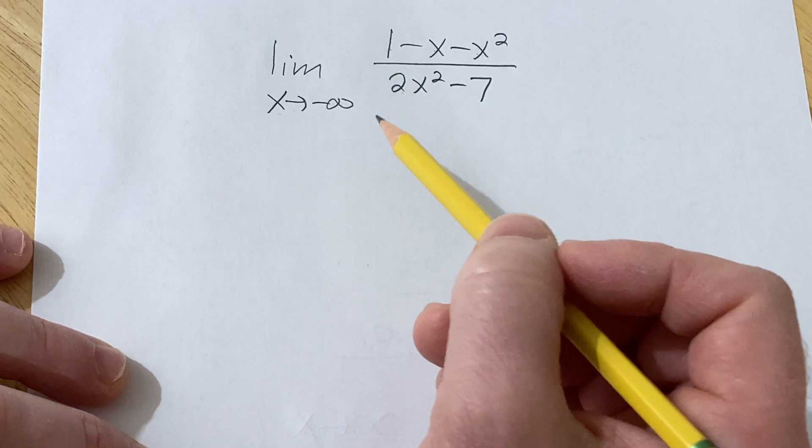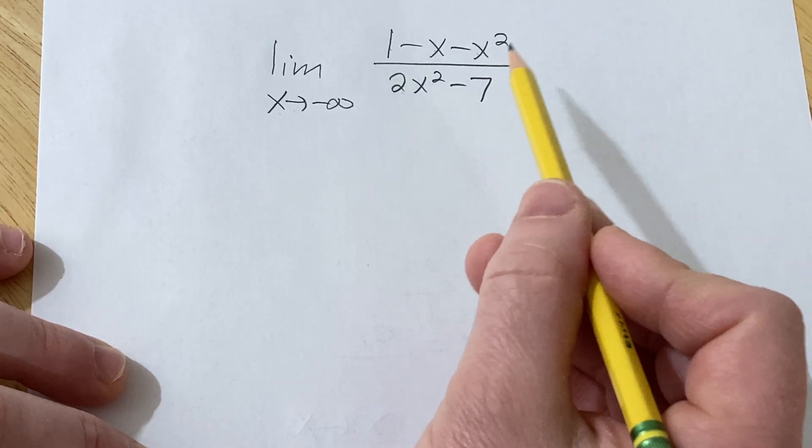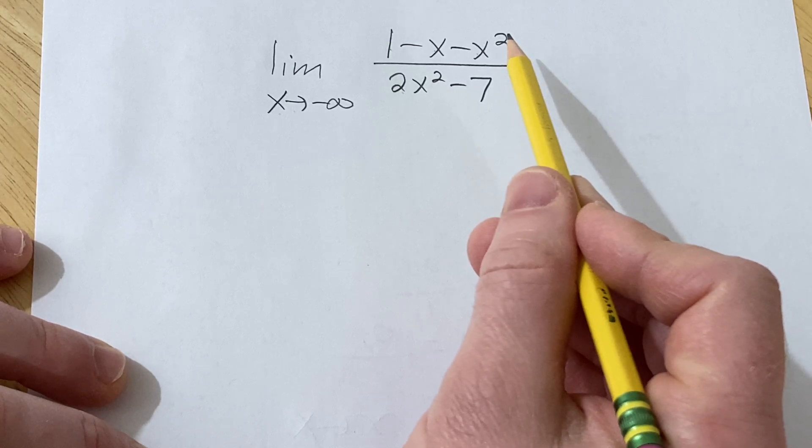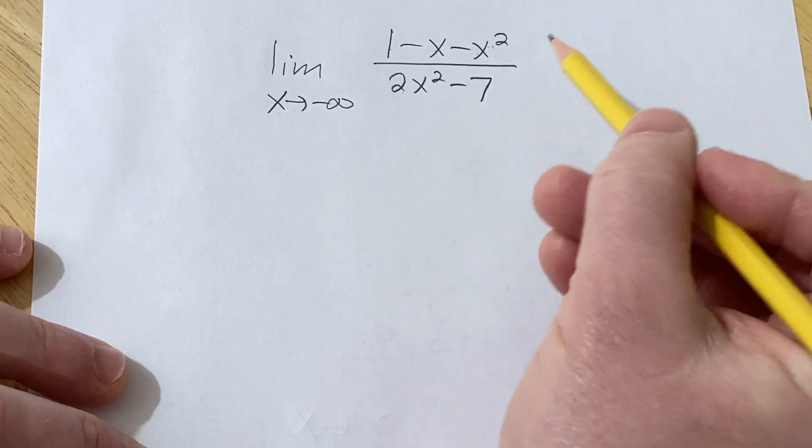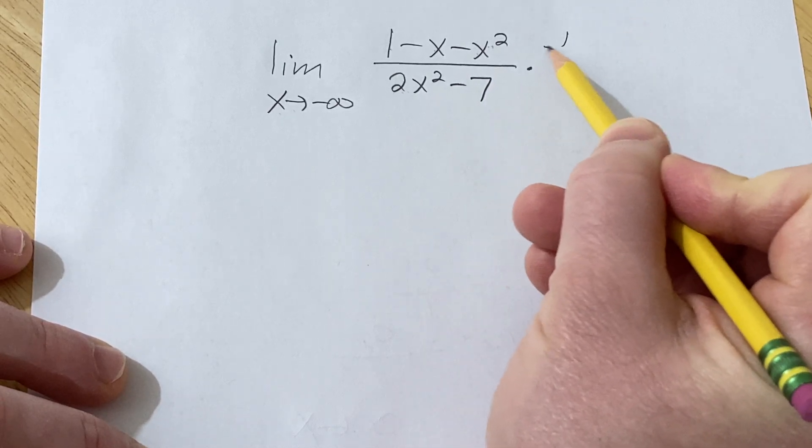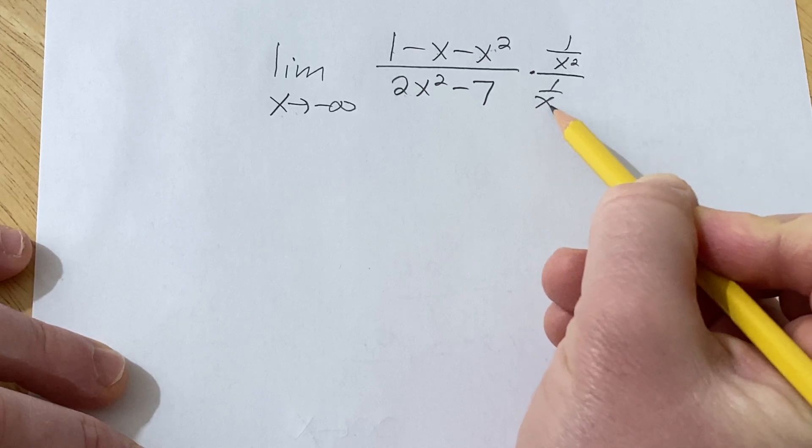So let's go ahead and do this by showing work. To show work, we're going to divide the numerator and denominator by x squared. In other words, we're basically going to multiply by 1 over x squared over 1 over x squared.